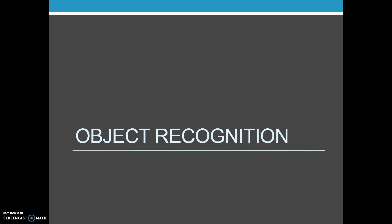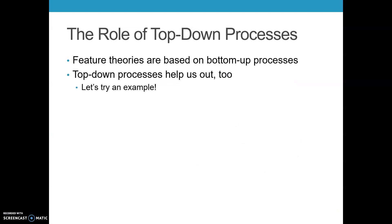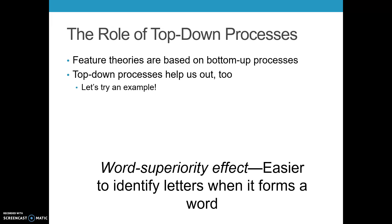Let me show you these words. I gave you the word 'makeshift,' and then I gave you a string of gibberish. Research shows that it's sometimes easier to identify a pattern when a letter forms a word rather than a random string. Odds are you had an easier time seeing the E in 'makeshift' than the R in the random string. This is known as the word superiority effect.